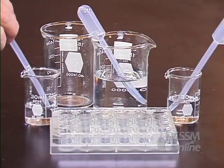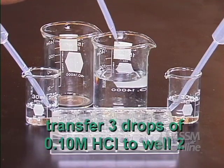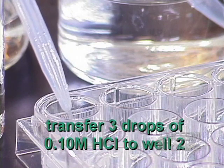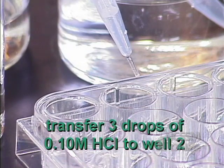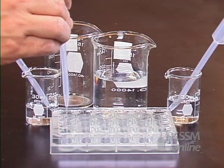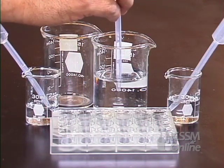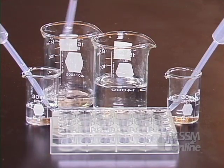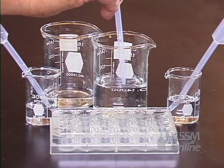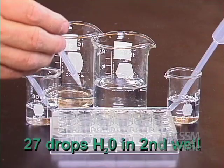Take your water dropper and transfer 3 drops of the solution from well 1 to well 2. Now rinse your dropper several times with water and empty it into your waste beaker. Add 27 drops of water to the second well.